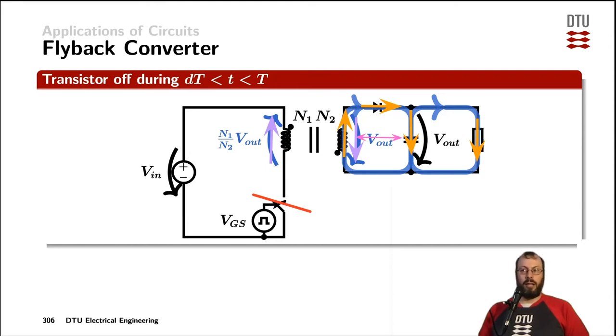If we have a look at Kirchhoff's voltage law on that primary side, we can meet N1 divided by N2 multiplied by V out and the input voltage V in, which equals the voltage across the transistor. So in this case, the transistor actually has to block more than the input voltage.